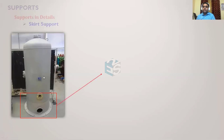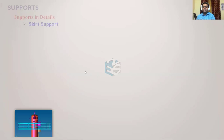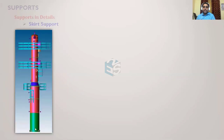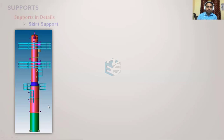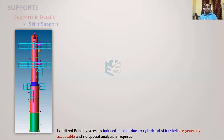This is a cylindrical type of skirt support. The base plate arrangement at the bottom is also called an anchor chair, because the anchor bolt rests upon it. The localized bending stresses induced in the head due to the cylindrical skirt shell are generally acceptable and no special analysis is required. The skirt is attached to the bottom dished end.